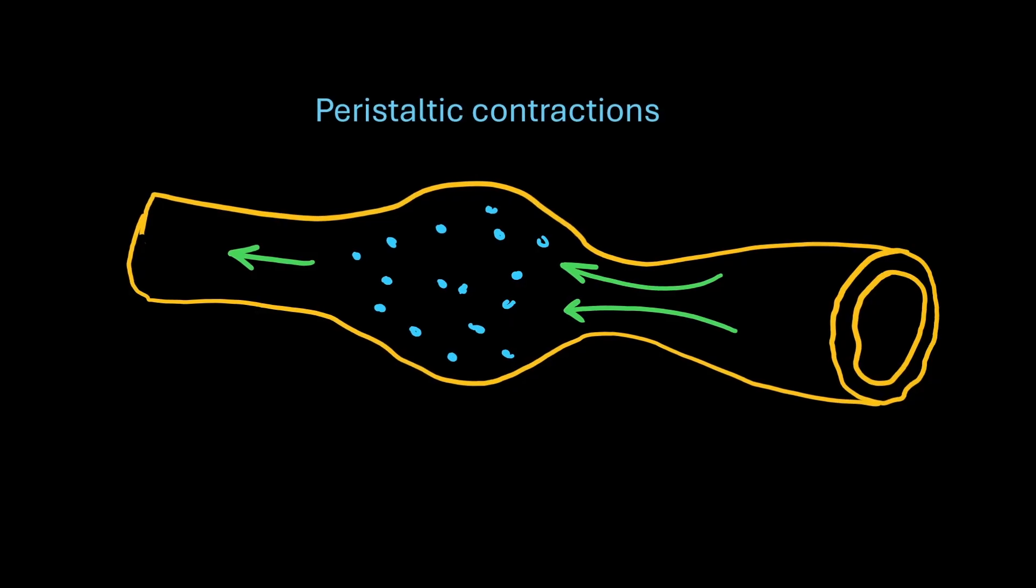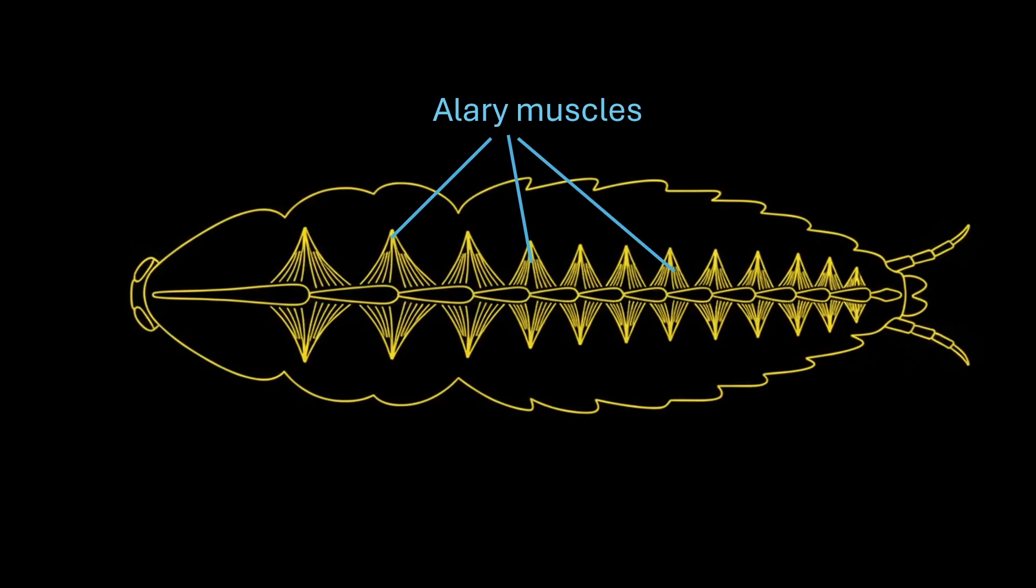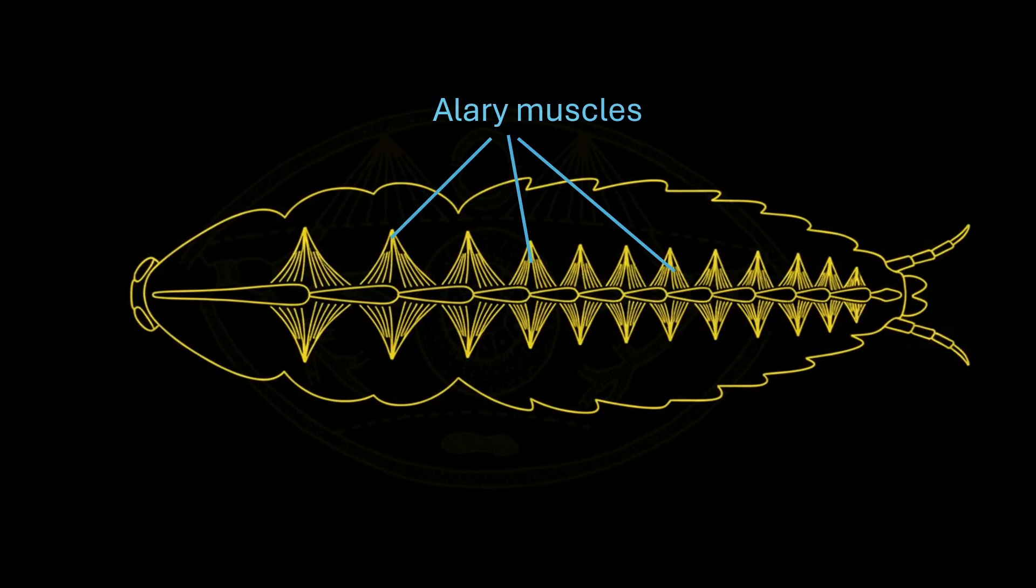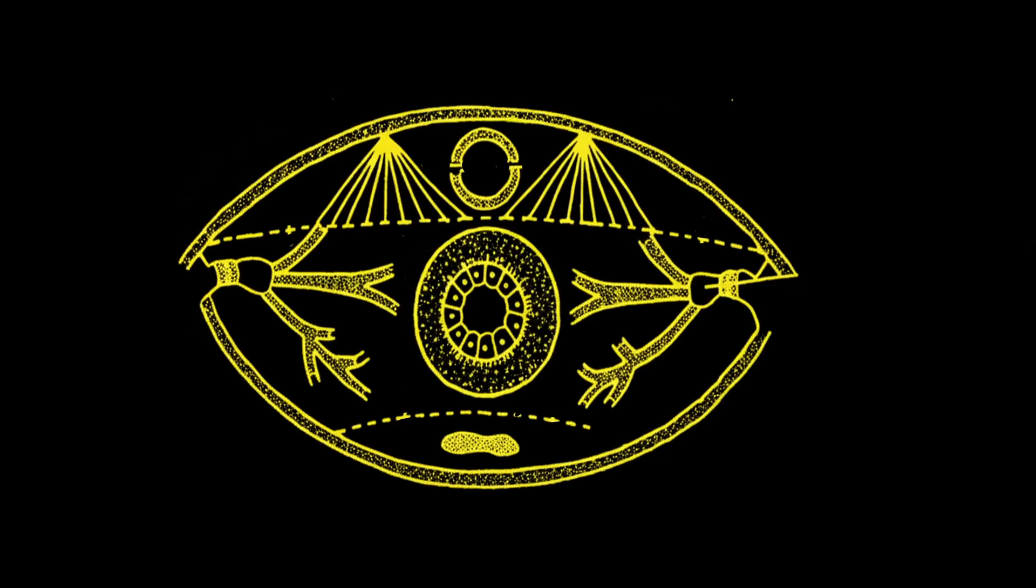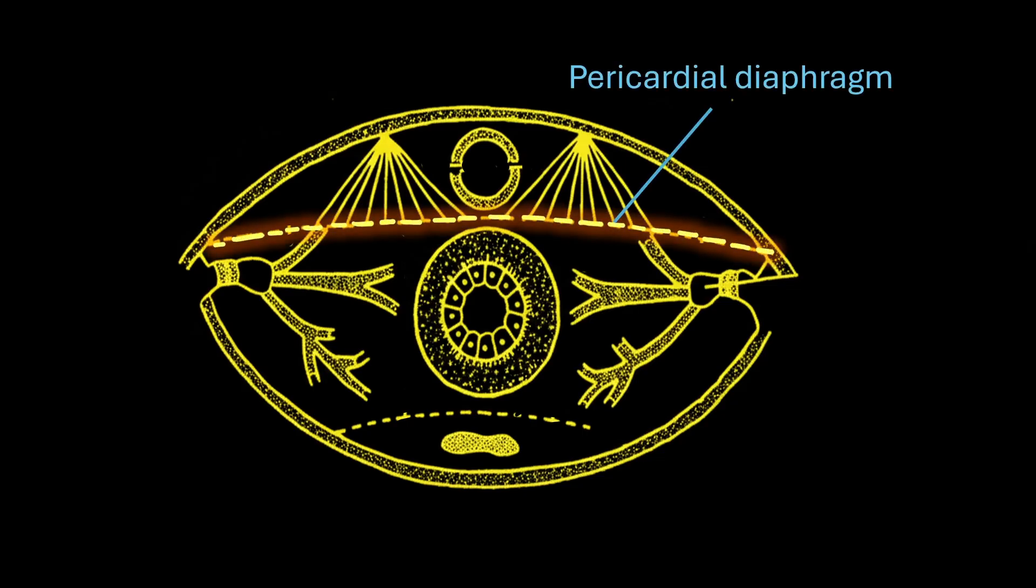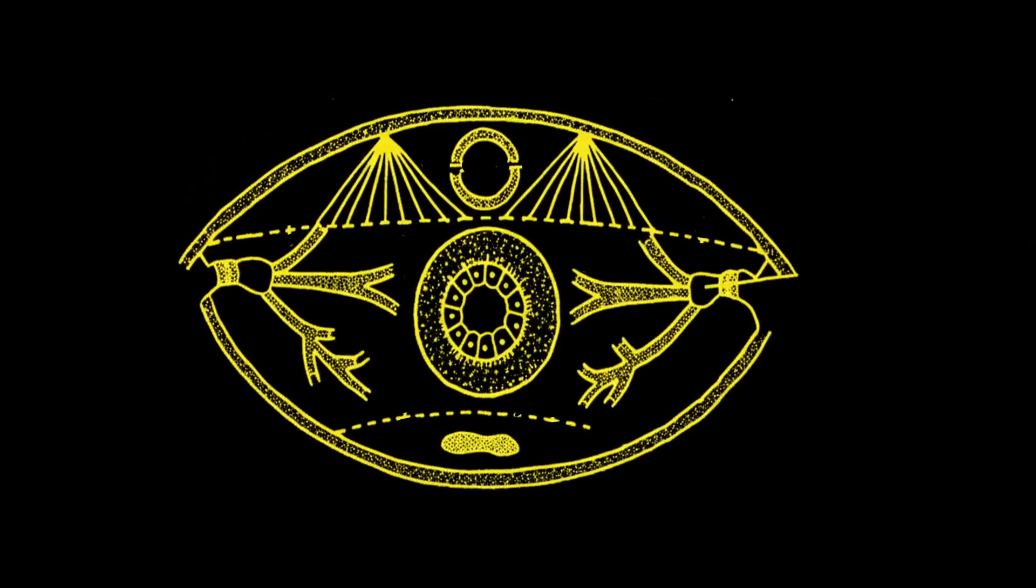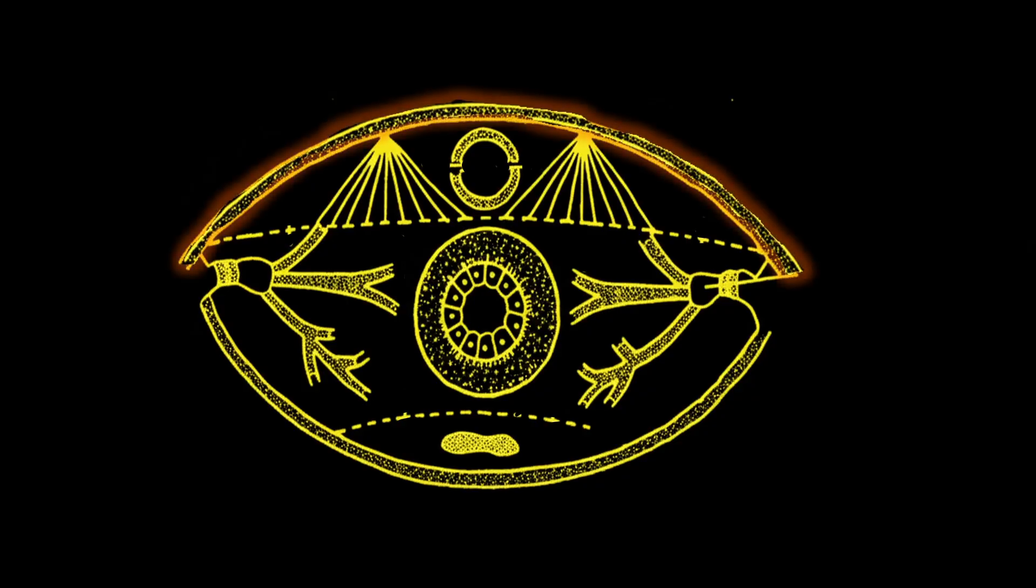These peristaltic contractions are generated by a pair of alary muscles which are present in each segment. These alary muscles are triangular-shaped muscles. The broader end of these muscles are attached to the pericardial diaphragm, while the pointed end of these muscles are attached to the tergum.